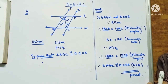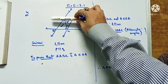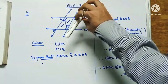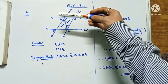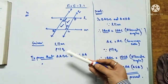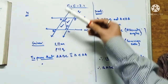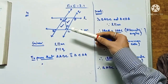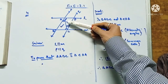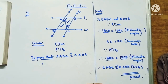To recap question four: L is parallel to M and P is parallel to Q are given. I had to prove triangle ABC congruent to triangle CDA. Using alternate angles from both pairs of parallel lines and the common side AC, the triangles are congruent by ASA.